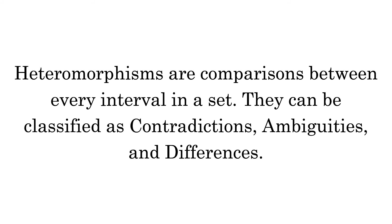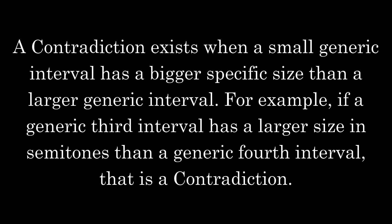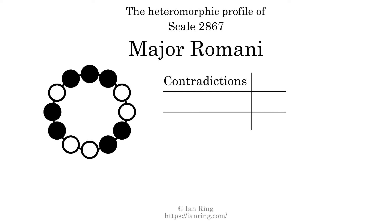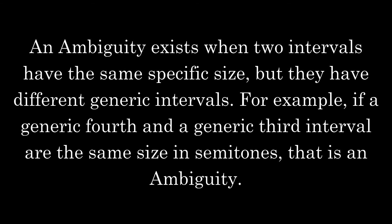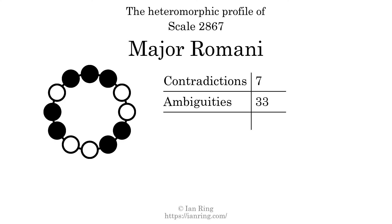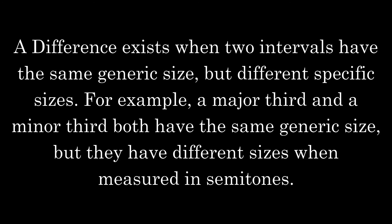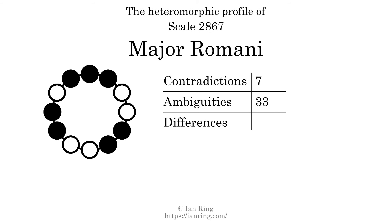Heteromorphisms are comparisons between every interval in a set. They can be classified as contradictions, ambiguities, and differences. A contradiction exists when a small generic interval has a bigger specific size than a larger generic interval — for example, if a generic 3rd interval has a larger size in semitones than a generic 4th interval. The number of contradictions in this scale is 7. An ambiguity exists when 2 intervals have the same specific size but different generic intervals. The number of ambiguities in this scale is 33. A difference exists when 2 intervals have the same generic size but different specific sizes — for example, a major 3rd and a minor 3rd. The number of differences in this scale is 90.